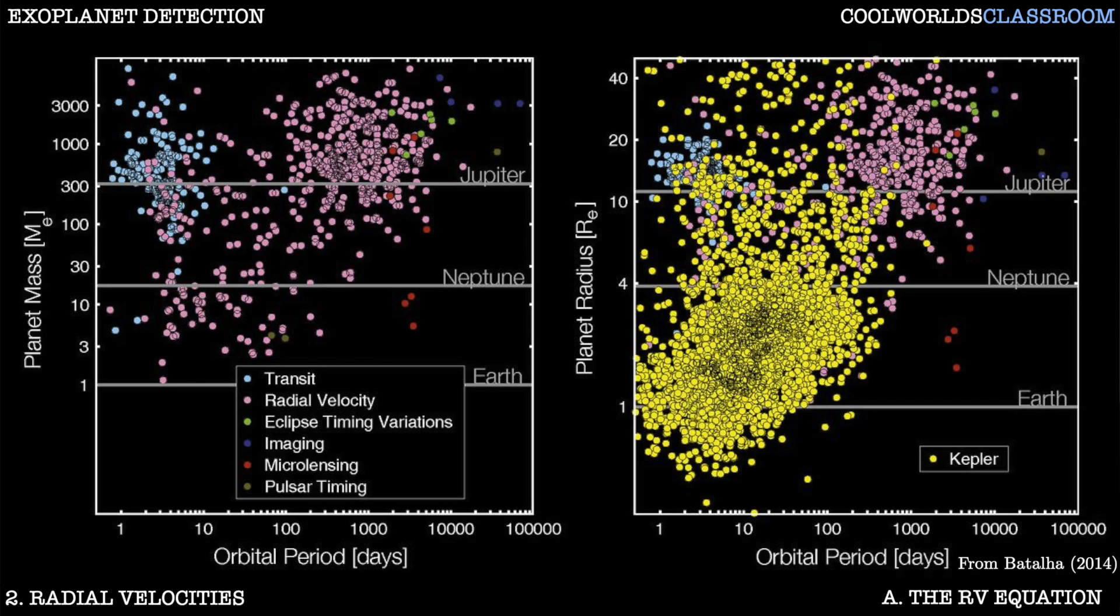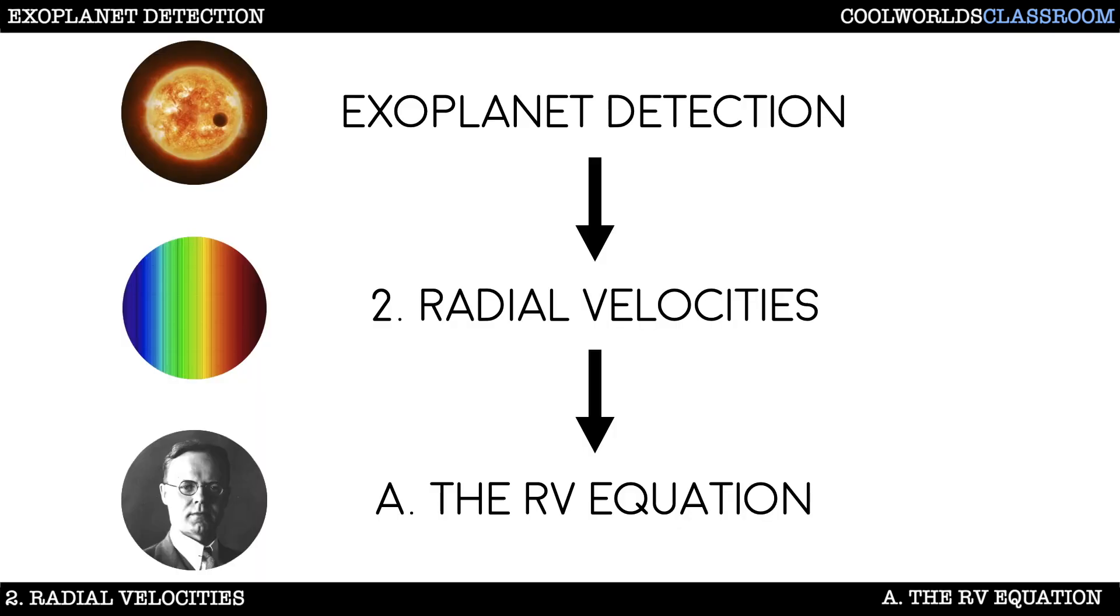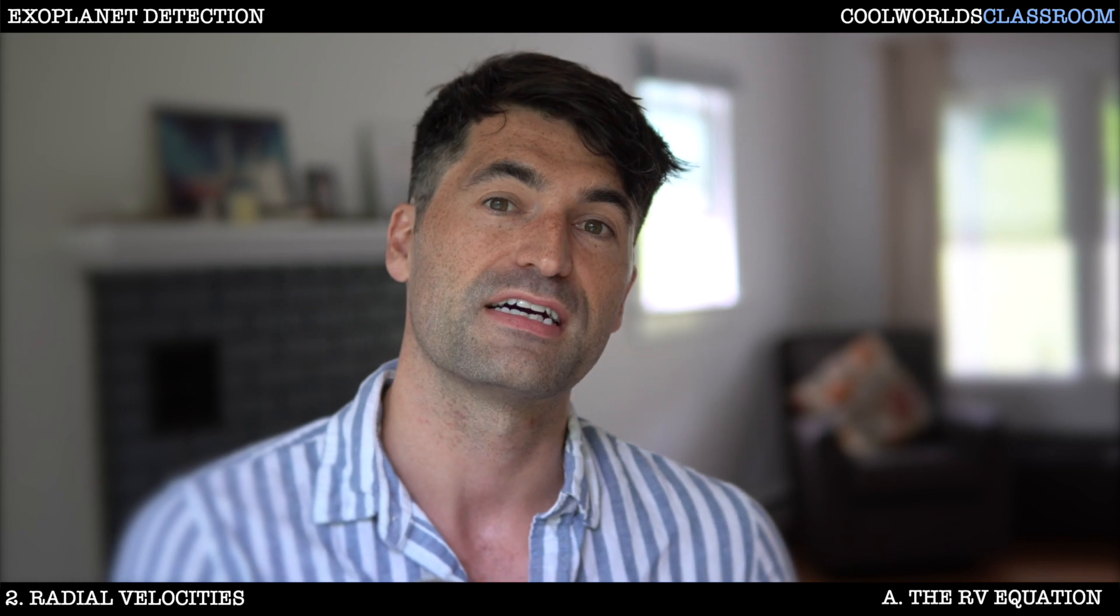Radial velocity detections dominated planet catalogues for the first decade and a half of the exoplanet era and are often still considered the gold standard of planet detection. For these reasons then it is crucial for every exoplaneteer to understand how this method works. There's a lot to be said about the radial velocity method, far more than I am able to cover in a single short video.